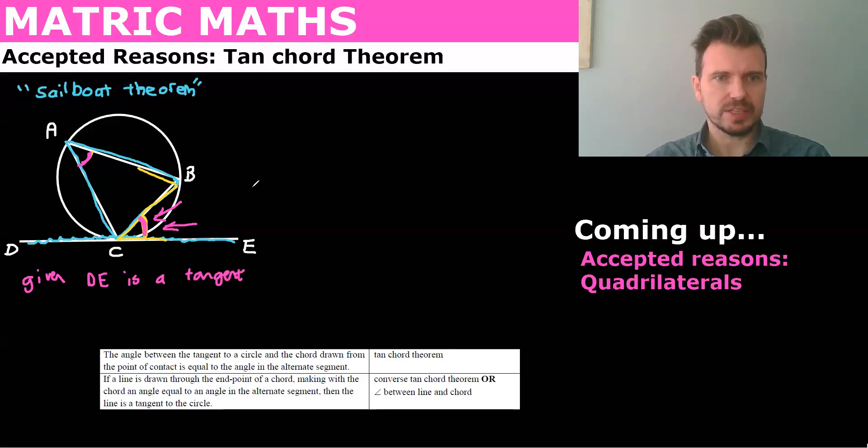So if we're given a tangent, then we can say that A is equal to BCE. And the reason is tan chord theorem.